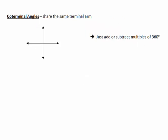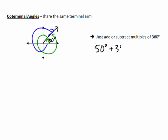Coterminal angles are angles that share the same terminal arm. If we put an angle in here — imagine this is 50 degrees — we could get to 50 degrees just by going from the initial arm to the terminal arm. But we could also go one full circle and get to that terminal arm, or go backwards to get to that same terminal arm. To find the coterminal angle, all we do is take our original angle and either add or subtract 360.